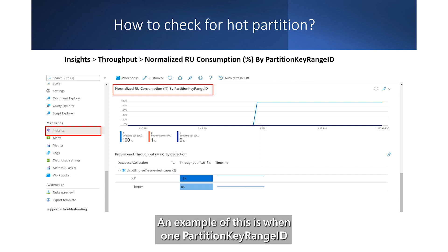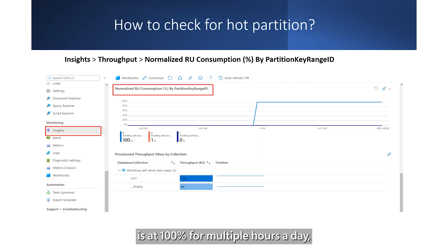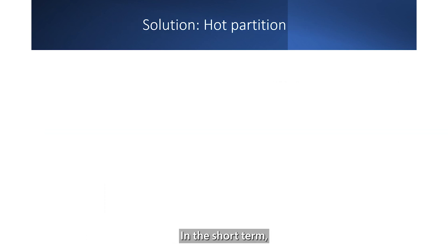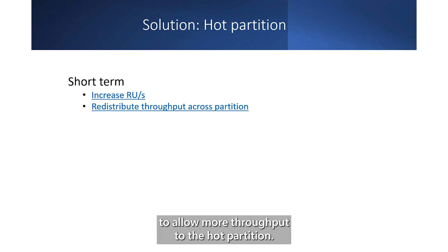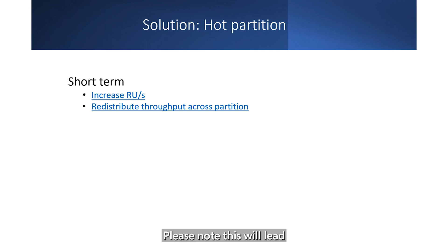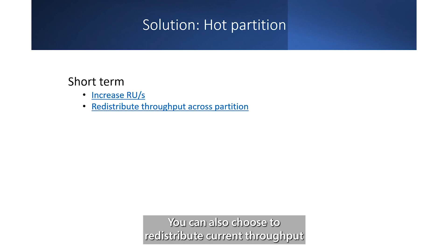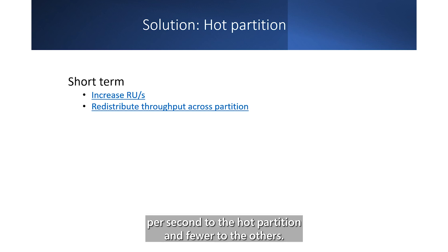An example of this is when one partition key range ID is at 100% for multiple hours a day, but others are at 30%. In the short term, you can temporarily increase the request units per second to allow more throughput to the hot partition. Please note, this will lead to over-provisioning and higher costs. You can also choose to redistribute current throughput across partitions by allocating more request units per second to the hot partition and fewer to the others.